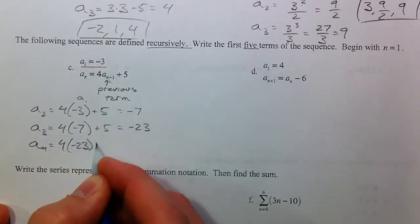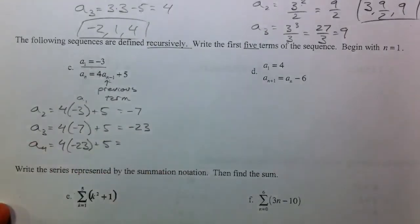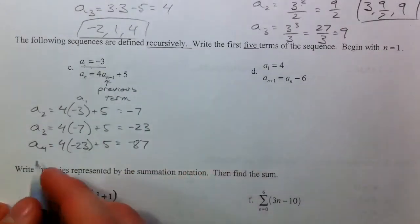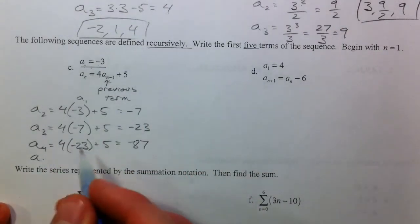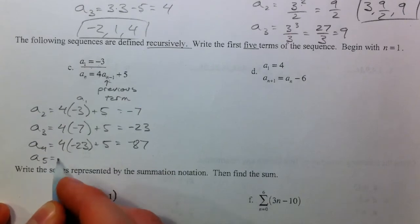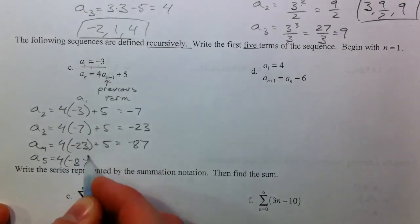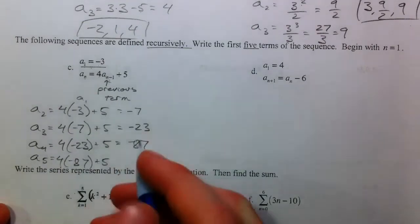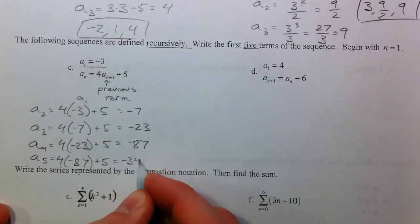4 times negative 23, the previous term plus 5. So 4 times negative 23 is 92 plus 5, get negative 87. And then our fifth term is 4 times negative 87 plus 5, negative 343.